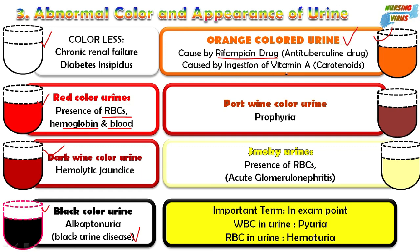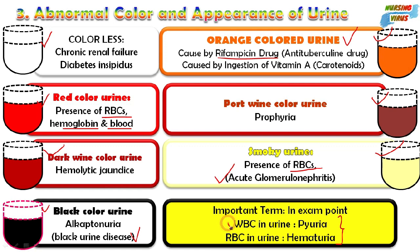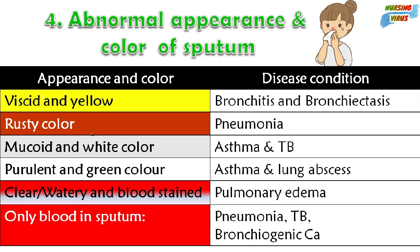Orange urine may also indicate ingestion of too much vitamin A or carotenoids. Port wine color urine indicates porphyria. Smoky urine indicates the presence of RBCs or acute glomerulonephritis. Some important terminologies asked in examinations: WBC presence in the urine is called pyuria, and RBC in the urine is called hematuria.